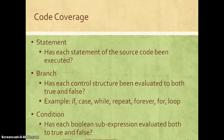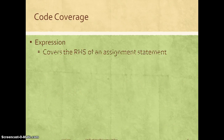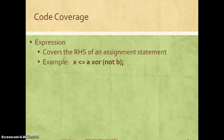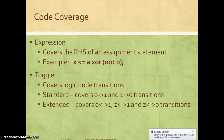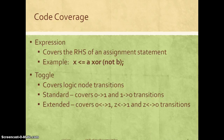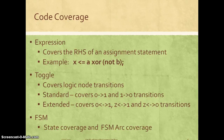Condition coverage gives a metric on whether every boolean sub-expression is evaluated to true or false. Expression coverage gives coverage on the right-hand side of assignments — for example, for x = a XOR (NOT b), it measures whether all combinations of the XOR and NOT are covered. Toggle coverage gives a toggle report on whether all logic nodes are transitioning; standard toggle coverage checks if every node toggles between 0-to-1 and 1-to-0, while extended toggle coverage gives more detail on transitions between all four states. FSM coverage gives coverage on different state transitions and arc coverages.